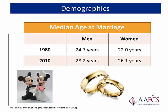The median age at marriage has steadily increased across the decades. A generation ago, in 1980, the median age at marriage for men was 24.7, and for women it was 22. In 2010, the median age at marriage for men was 28.2, and for women 26.1. Half of the adults today live with a spouse — that's as of 2015 — down from two-thirds in 1967.